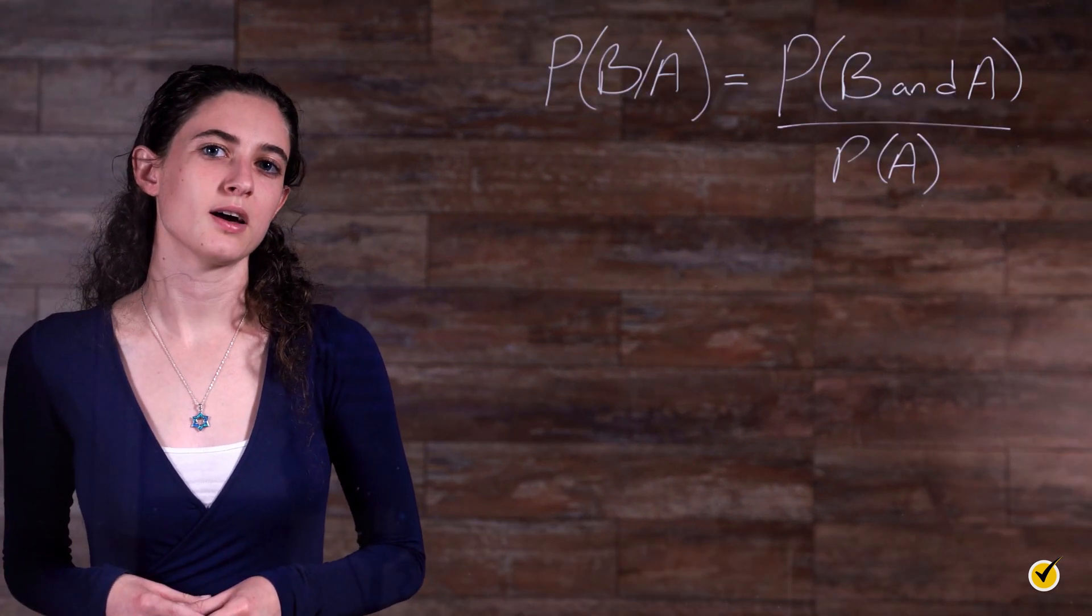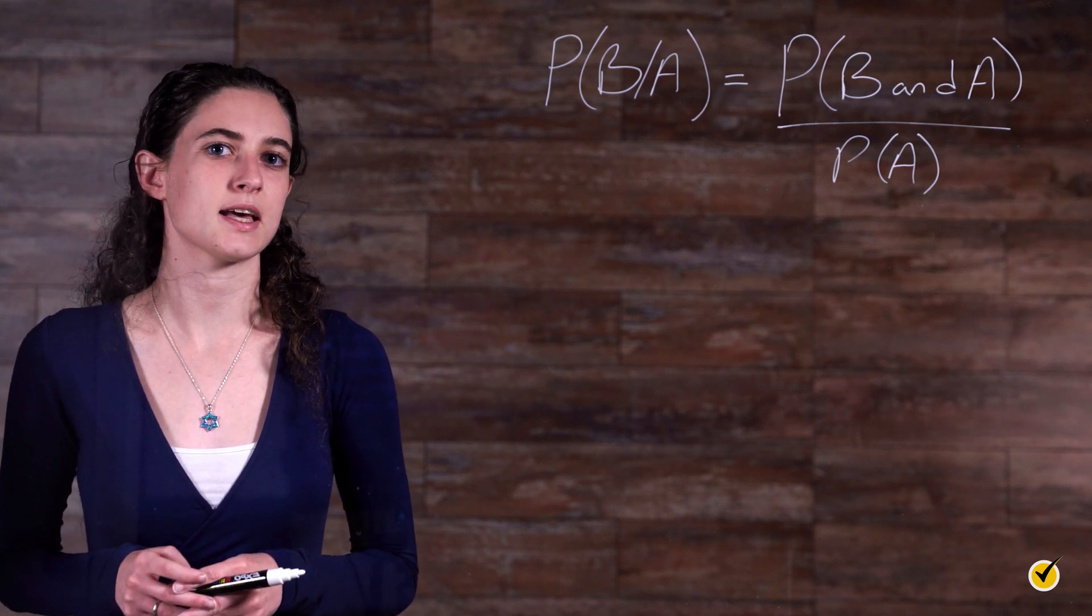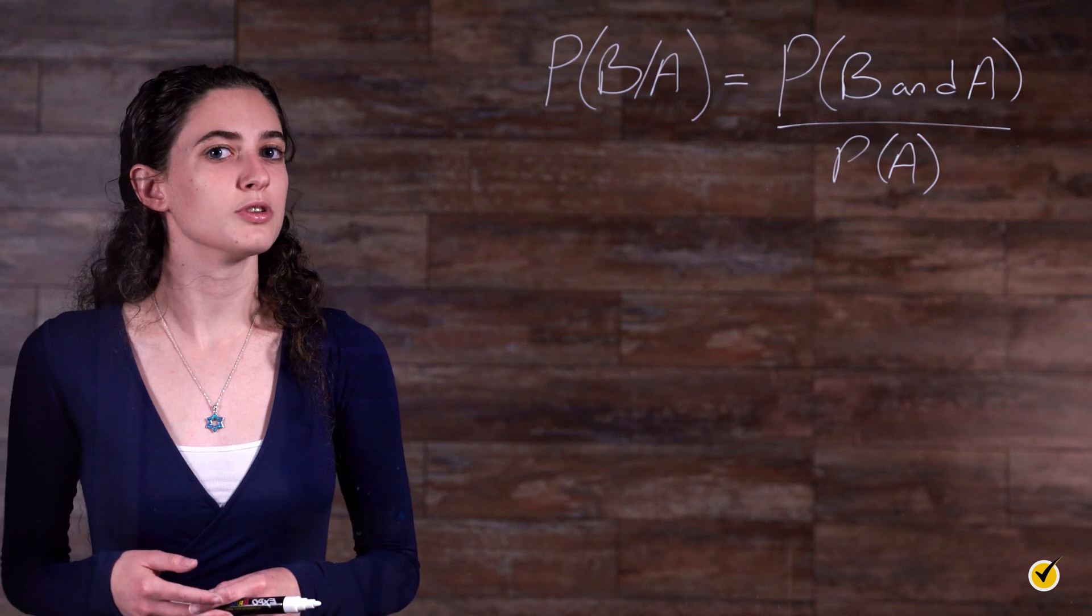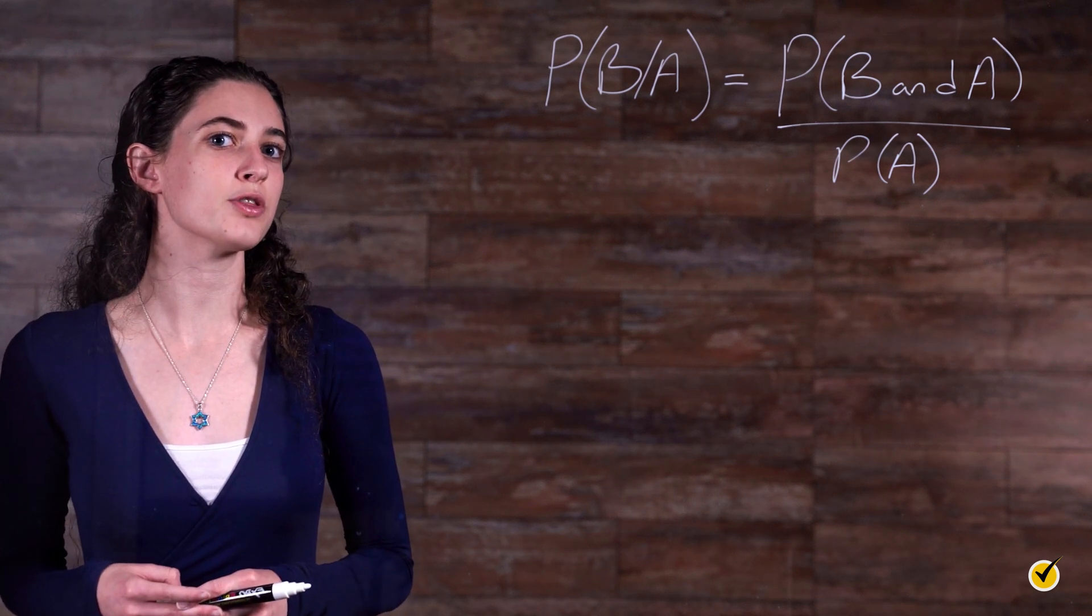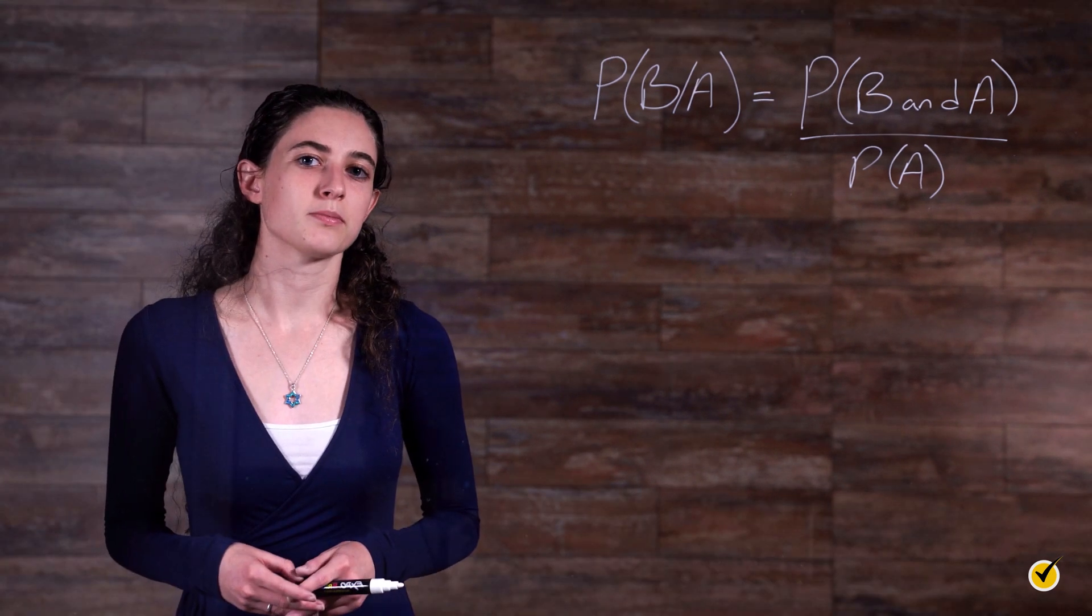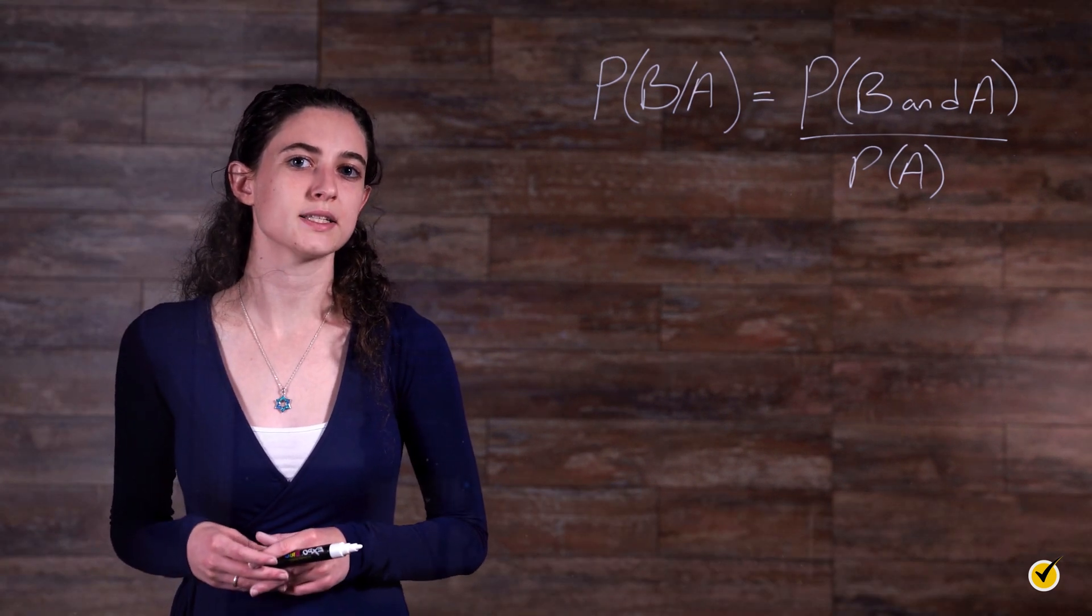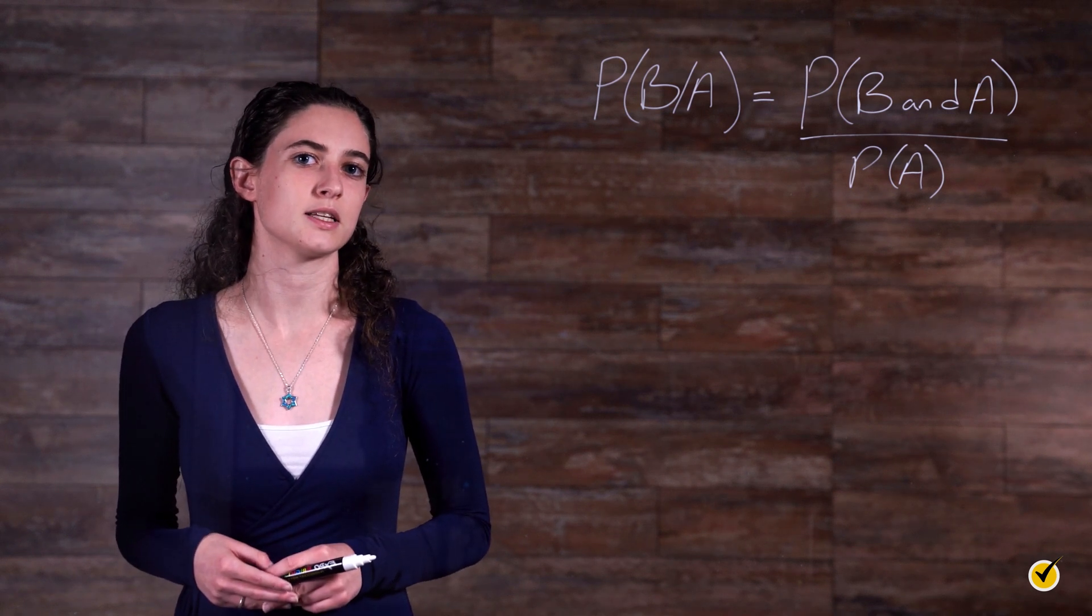We read this formula as the probability P of event B happening given that event A has happened is equal to the probability of events B and A happening over the probability that event A has happened. In these types of problems, both probabilities on the right side of the equation are usually given or can be determined from a sentence or table.